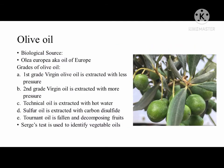Lastly is olive oil with biological source Olea europaea, also known as the oil of Europe. Olive oil has various grades. The first grade, virgin olive oil, is extracted with less pressure. The second grade virgin oil is extracted with more pressure. The technical oil is extracted with hot water. The sulfur oil is extracted with carbon disulfide. And lastly, the tournant oil is formed from fallen and decomposing fruits of the plant. Sturge's test is used in identifying vegetable oils.